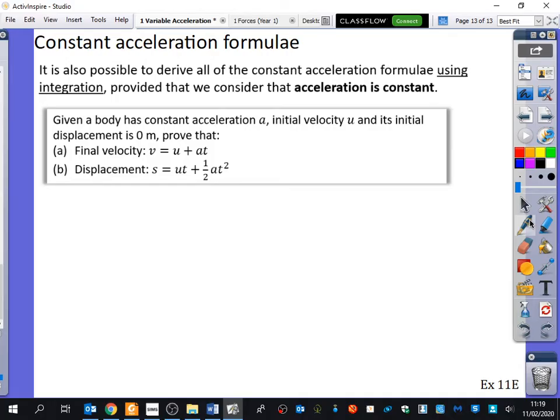So it says here, given that a body has constant acceleration A, initial velocity U, and its initial displacement is 0 metres, prove that the final velocity is V equals U plus AT. We're very familiar with that formula. And that the displacement S is UT plus a half AT squared.